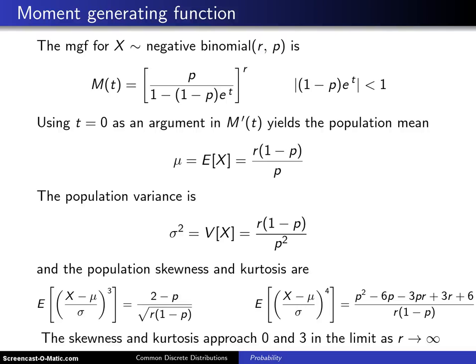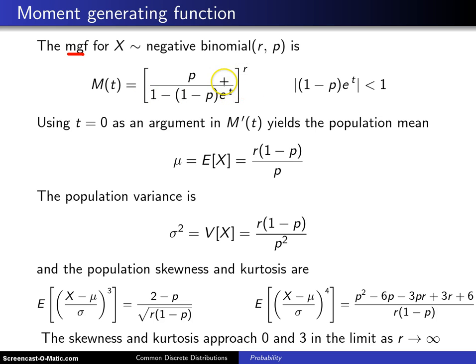This slide concerns the moment generating function and the moments for a negative binomial random variable with parameters r and p. The moment generating function for x having the negative binomial distribution with parameters r and p is m of t, equal to p divided by 1 minus (1 minus p) times e to the t, all raised to the r power.